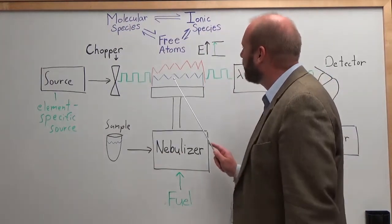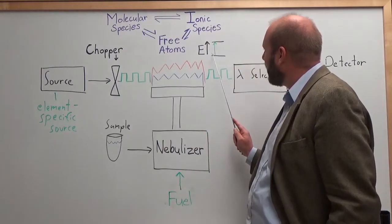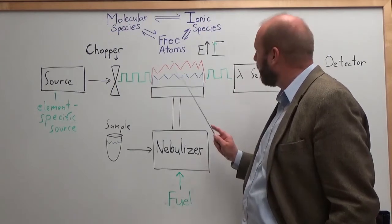Now, I'm going to spend a minute to talk about the flames here. In the flame, we have our free atoms. Our free atoms can absorb this light, causing a transition from the ground state to the excited state, as we outlined earlier.